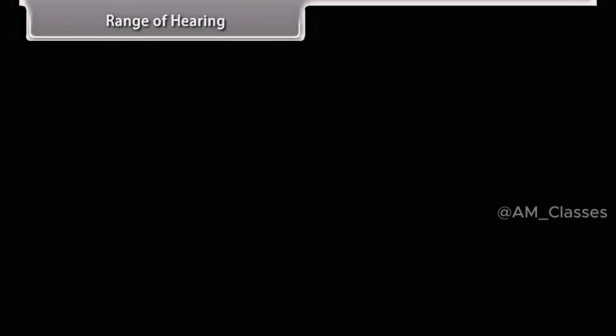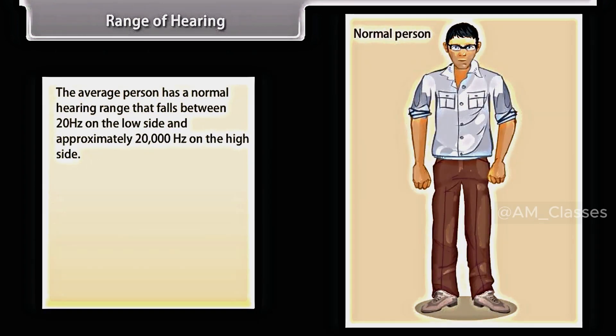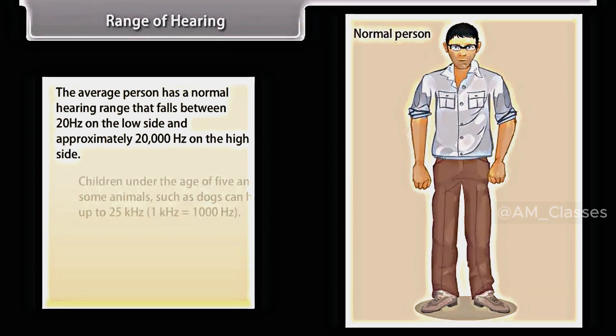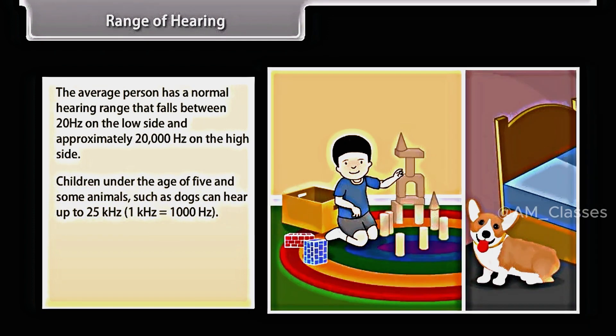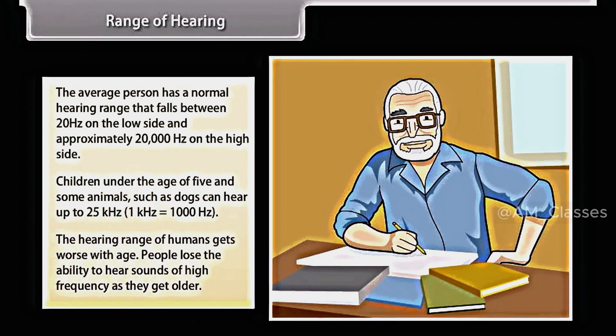Range of hearing. The average person has a normal hearing range that falls between 20 hertz on the low side and approximately 20,000 hertz on the high side. Children under the age of 5 and some animals, such as dogs, can hear up to 25 kilohertz. The hearing range of humans gets worse with age. People lose the ability to hear sounds of high frequency as they grow older.